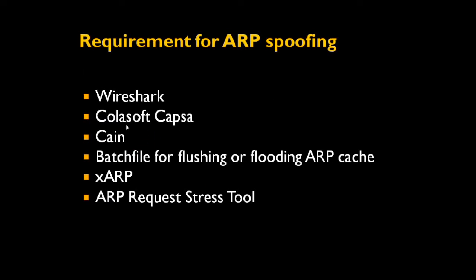Tools required include Wireshark, Colasoft, Capsa, and Cain. A batch file for flushing or flooding ARP cache is also needed. XARP is a tool which detects whether there is ARP poisoning or ARP attack — it is especially for detecting bad ARP traffic. The ARP request stress tool is a tool which generates spoofed ARP requests.